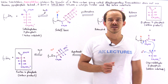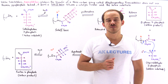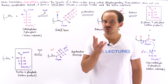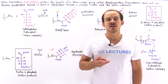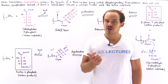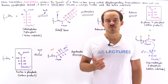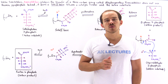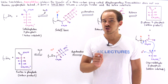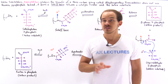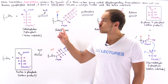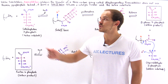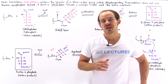The non-oxidative phase of the pentose phosphate pathway involves two important enzymes: transketolase and transaldolase. In the previous lecture, we focused on the reaction mechanism of transketolase. In this lecture, we're going to discuss the reaction mechanism of transaldolase.